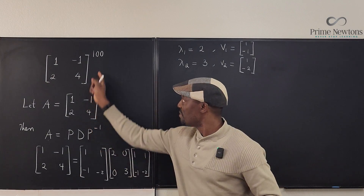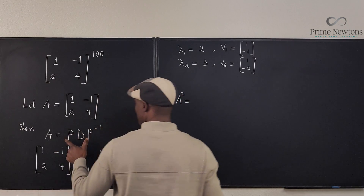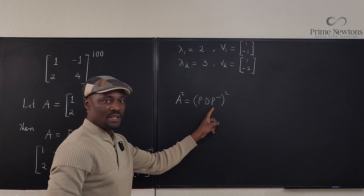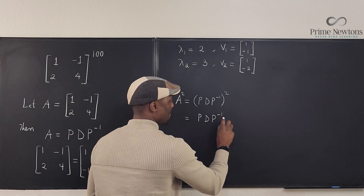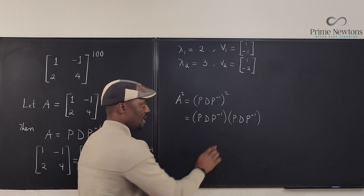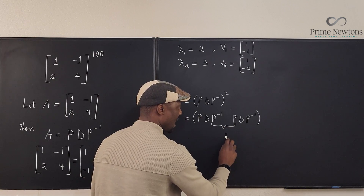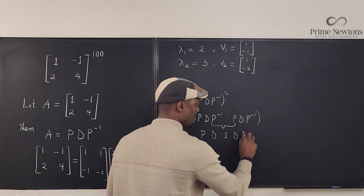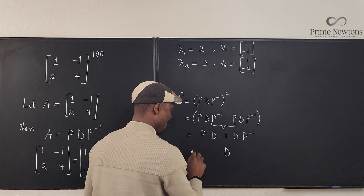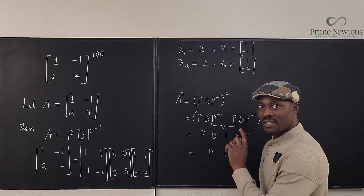Let me explain how raising this to the power 100 works by first doing power 2. A² = (PDP⁻¹)² = PDP⁻¹ · PDP⁻¹. Removing the parentheses, P times its own inverse is just I, giving P · D · I · D · P⁻¹ = P D² P⁻¹. So we've squared just the diagonal matrix D.